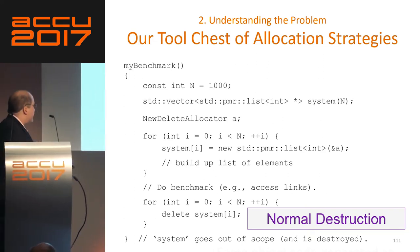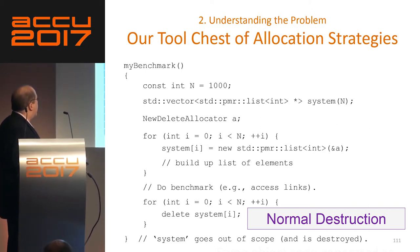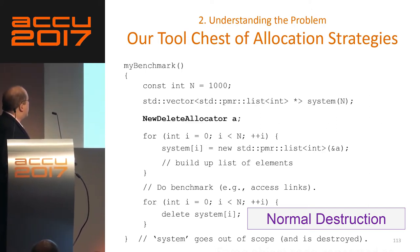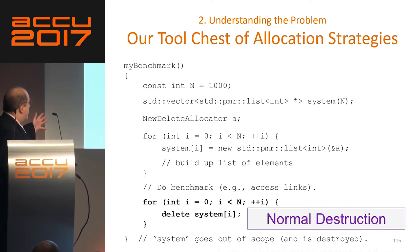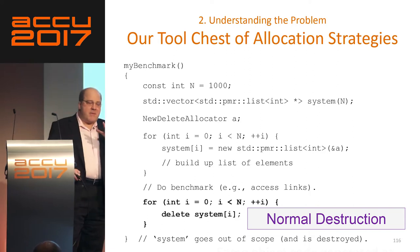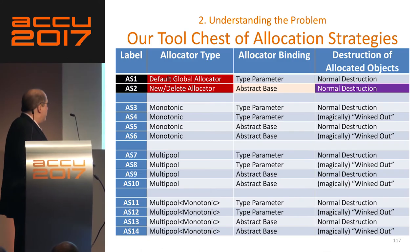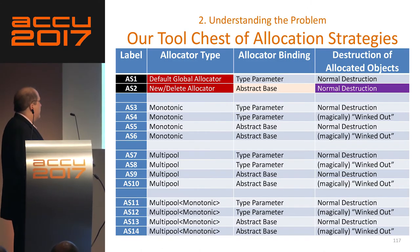If I don't make it inline, I'm potentially giving up performance. So, here's normal destruction for allocation strategy two as well — same pattern. New-delete allocator, do the benchmark, get rid of it. Now we're going to look at our first local allocation strategy.